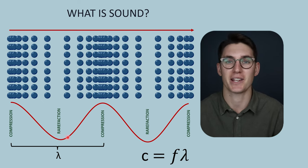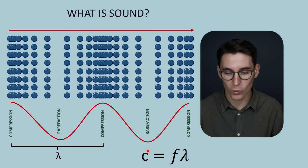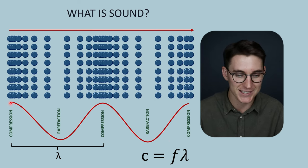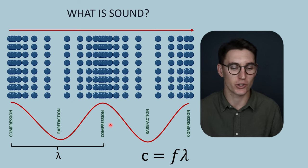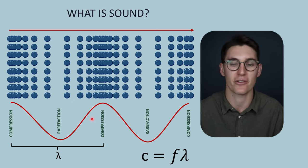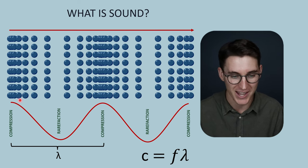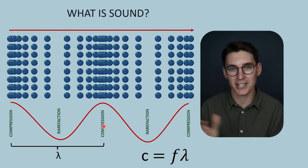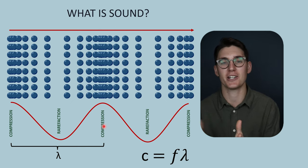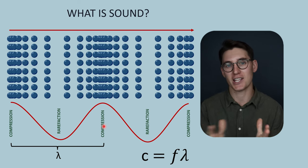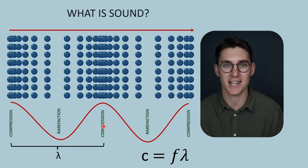As with electromagnetic radiation and any wave, we can define some properties of a sound wave. The first is wavelength — the distance between successive equivalent regions on a wave, such as from one region of compression to the next, or one region of rarefaction to the next. The next property is frequency: how many cycles of that wave pass a particular point in a given period of time. We measure frequency in hertz, where one hertz equals one wave passing a point in one second.